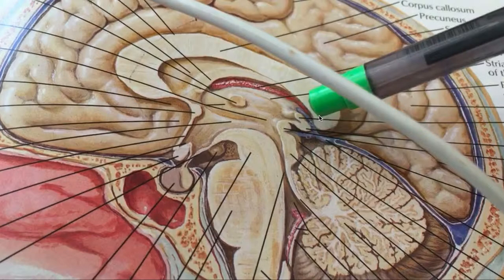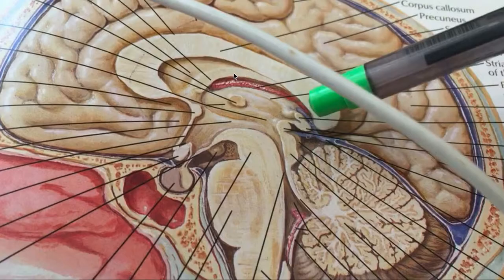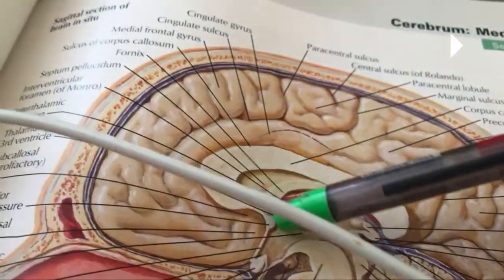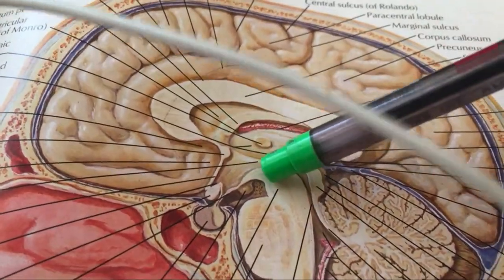It makes complete logical sense, because here would have been your fornix formation, and it goes around like that. That's your corpus callosum.